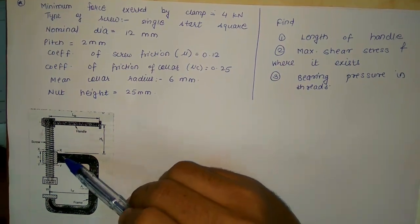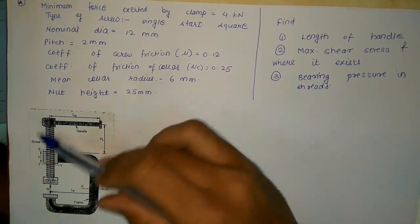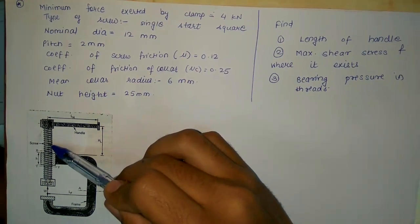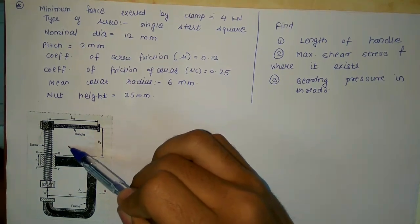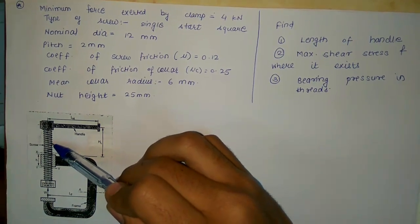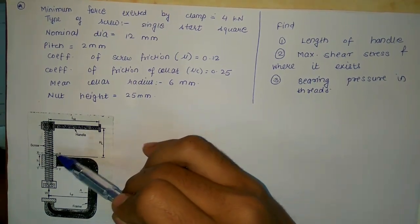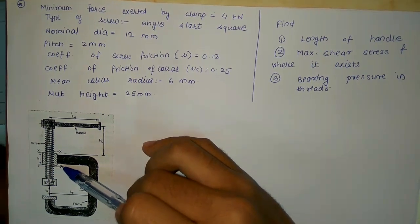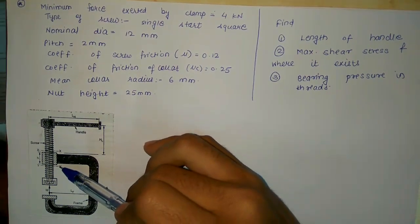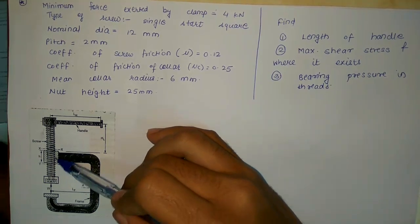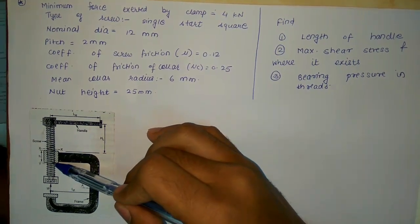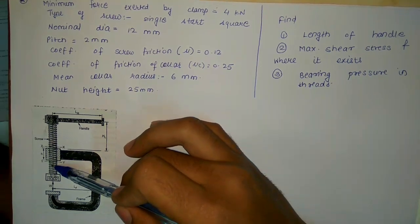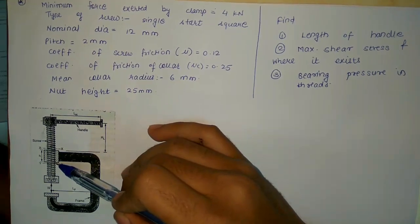When you rotate the handle, the torque applied will tend to bend the screw above section XX or shear it. At section YY, the screw may be subjected to shear stress or crushing stress. Therefore, as two different stresses act on the screw body, we must calculate stresses at both sections XX and YY.